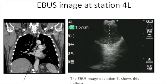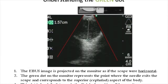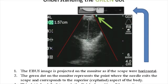This slide shows the coronal CT view and the EBUS image at station 4L. To understand how the EBUS image correlates with the CT scan, however, several reference points must be identified. The EBUS image is projected on the monitor as if the scope were horizontal. The green dot on the monitor represents the point where the needle exits the scope, corresponding to the cephalad aspect of the body, and is by default towards the 1 o'clock position on the monitor.